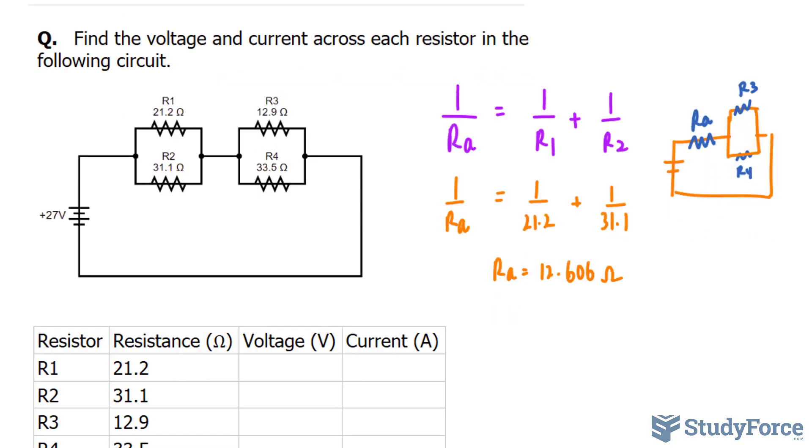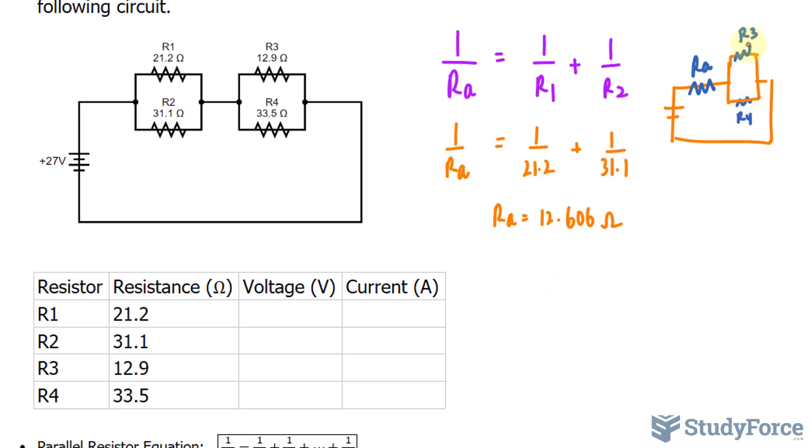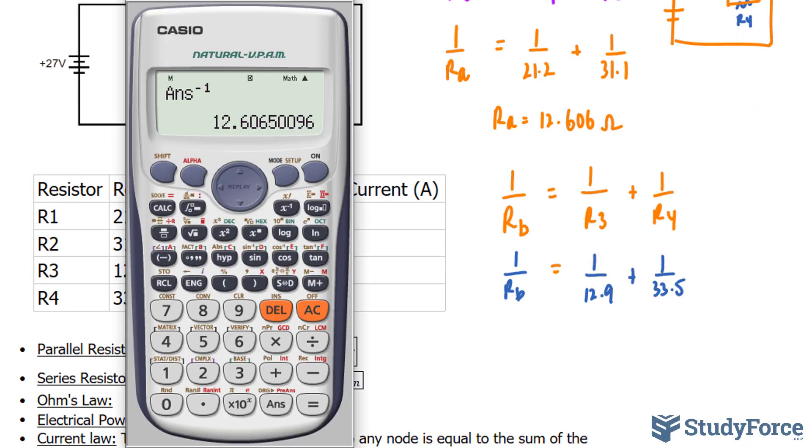So the next step is to combine R3 and R4 into a single resistor. Again, they're in parallel, so I'll write down 1 over, this time I'll call it RB, is equal to 1 over R3 plus 1 over R4. So I'll substitute the resistance for R3 and R4 into where they belong. 1 over 12.9 plus 1 over 33.5 is equal to 1 over RB. Let me go ahead and use my calculator really quickly. So I have 1 over 12.9 plus 1 over 33.5. I end up with this value. Then I take 1 divided by that value, and I end up with 9.313.